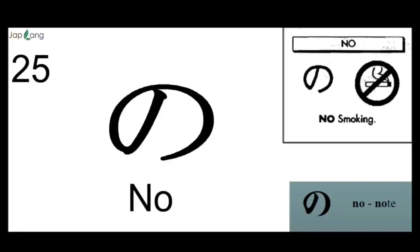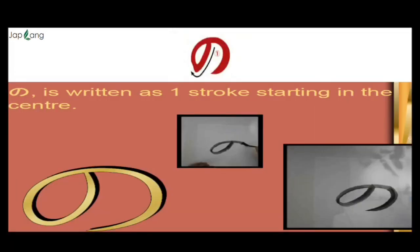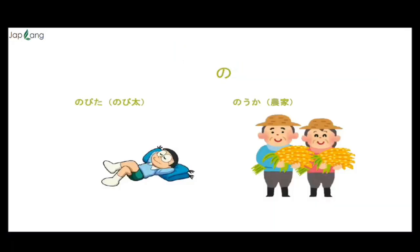Next is NO. You can relate with the NO smoking sign. The sound with NO is NO. This is the only one-stroke order — we start with NO, starting in the center. NO as in Nobita — the Doraemon cartoon character. NO also relates to farming — those who do the farming.